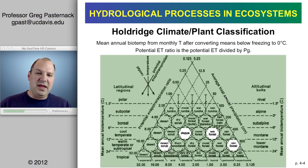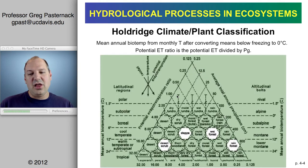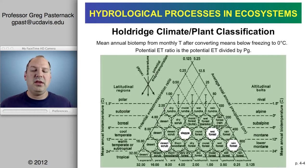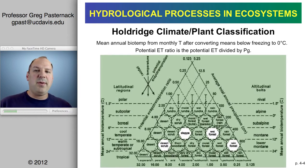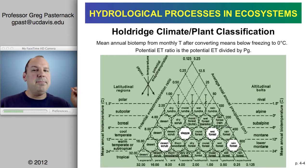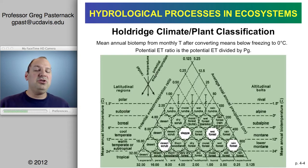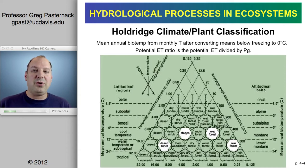If you consider the upper right line as the base and ascend to the lower left, we're increasing in potential evapotranspiration. Evapotranspiration is the millimeters of water evapotranspiring away. Potential means that given the climate, this is the maximum that could take place given the energy that climate provides. Usually the landscape doesn't have as much water available as could evapotranspire — so this is the potential driving it.